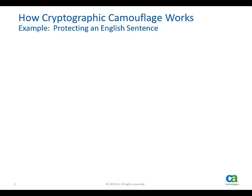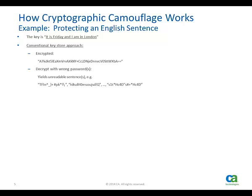Here's how cryptographic camouflage works. Assume that the key is 'It's Friday and I'm in London.' With a conventional keystore approach, encrypted, this is the result of that key. To decrypt it with a wrong password, you get unreadable results. Decrypt it with the correct password and you get the readable result: 'It's Friday and I'm in London.'